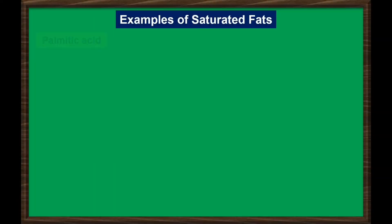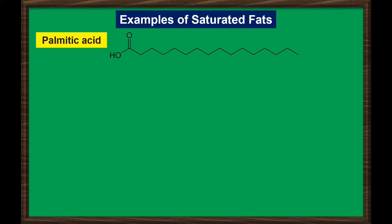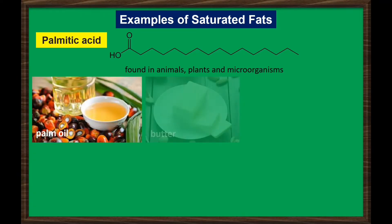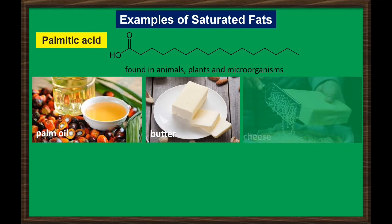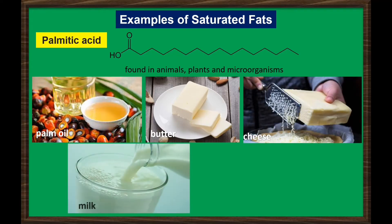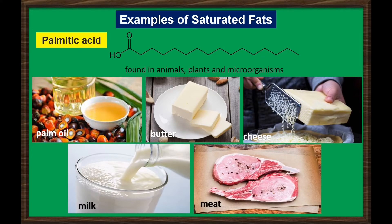Palmitic acid is 16 carbon atoms long and is usually found in animals, plants, and microorganisms. Palmitic acid is found naturally in palm oil, as well as in butter, cheese, milk, and meat.